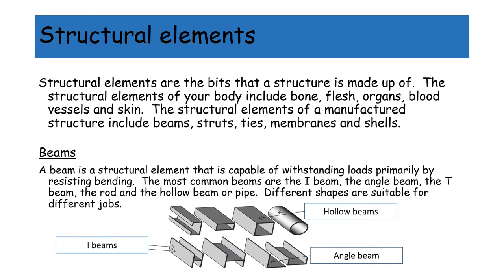We will first look at the structural elements. Structural elements are the bits that the structure is made up of. The structural elements of your body include bone, flesh, organs, blood vessels and skin. The structural elements of a manufactured structure include beams, struts, ties, membranes and shells.